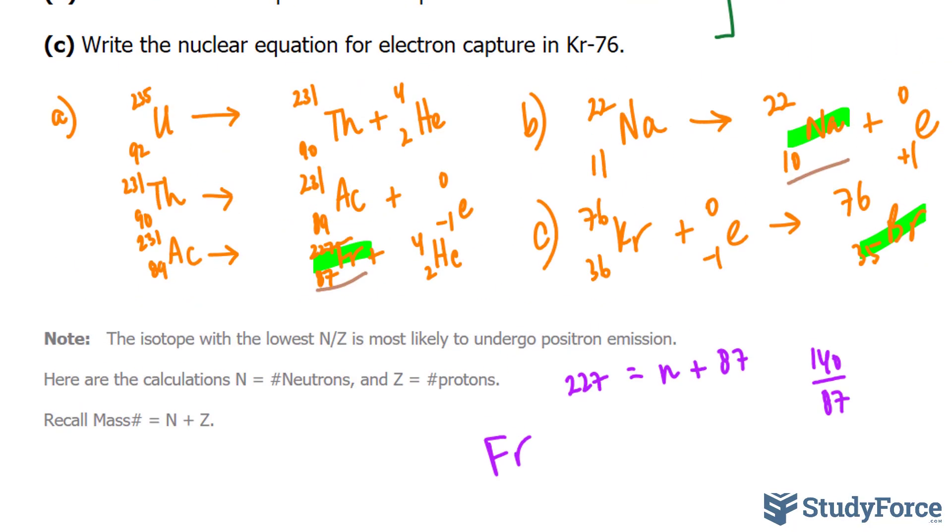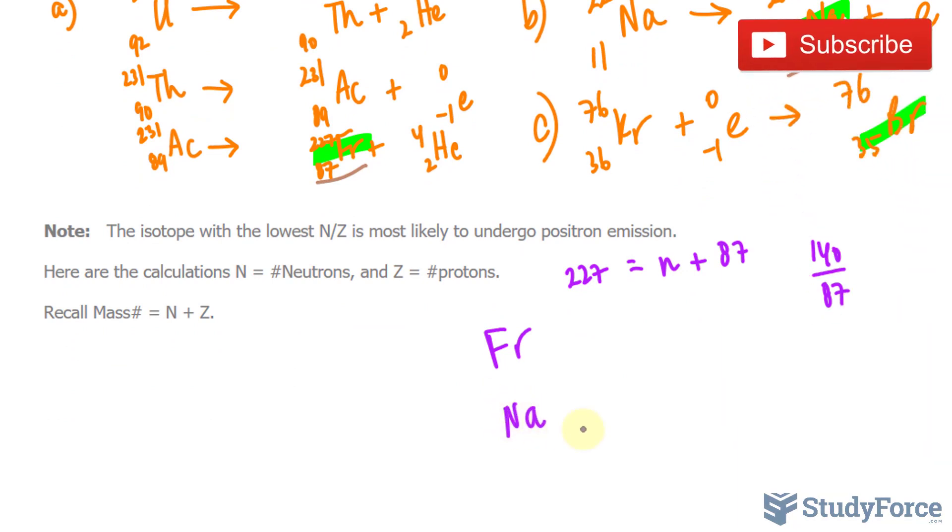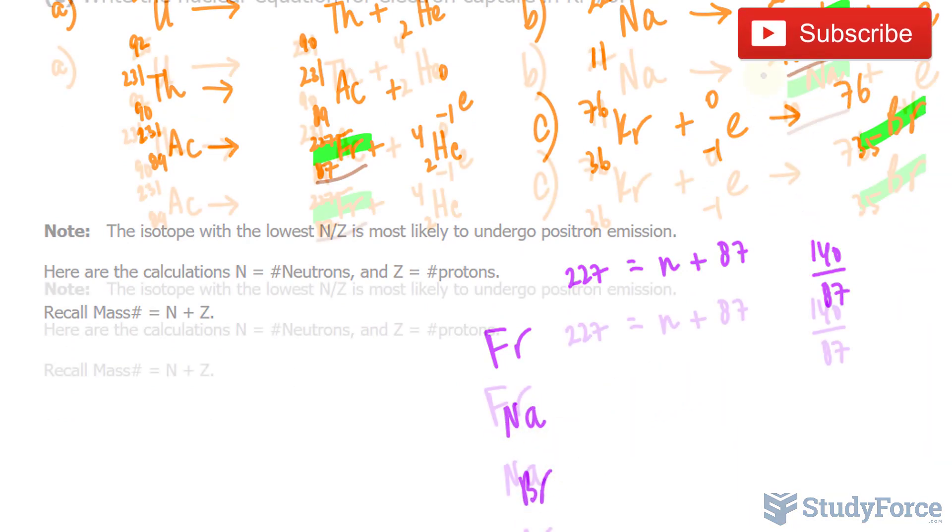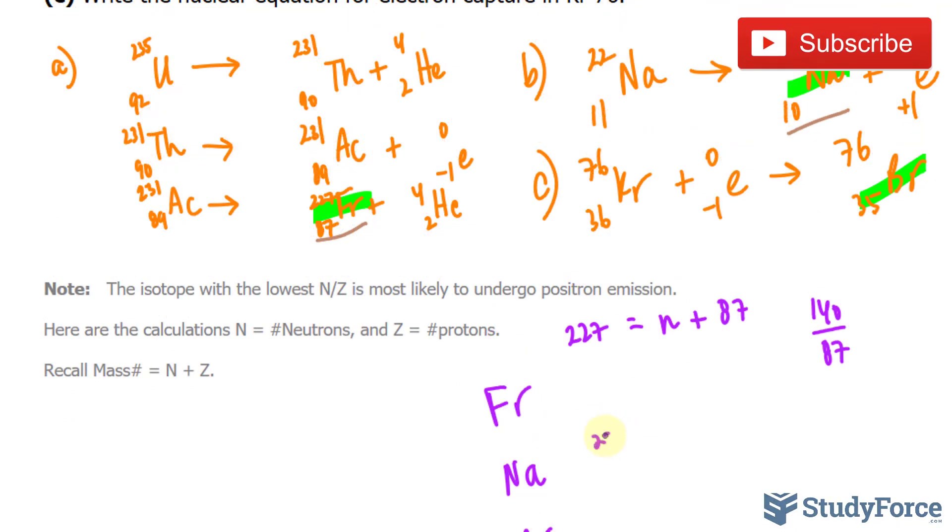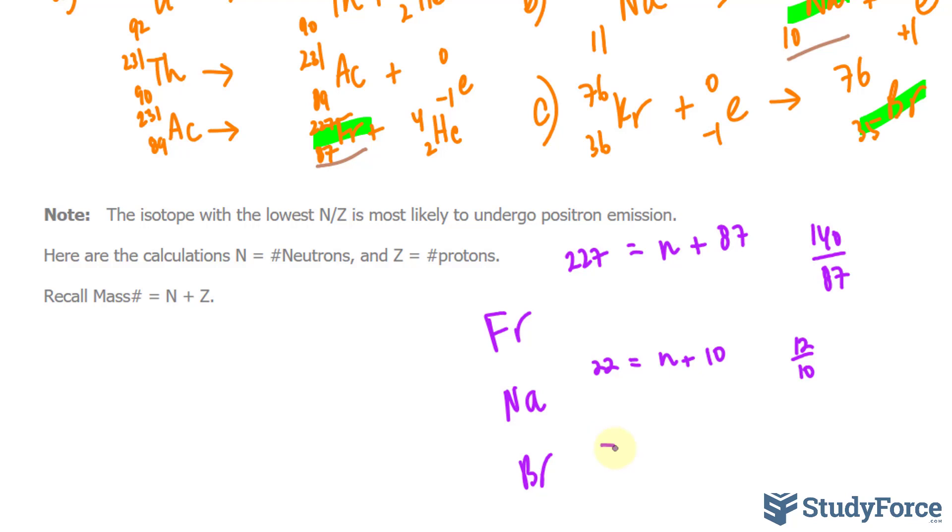I'll do this again for sodium and bromine. This one had 22 is equal to n plus 10. Subtracting 10 from 22, that's 12. So we have 12 divided by 10. Bromine was 76 equals n plus 35, that's equal to 41, so 41 divided by 35.